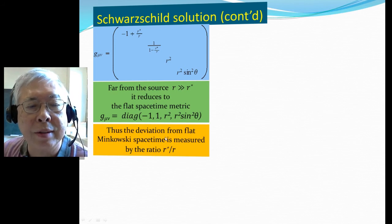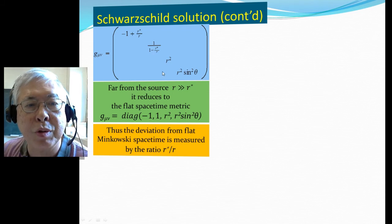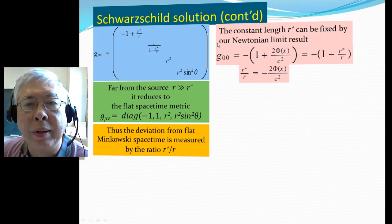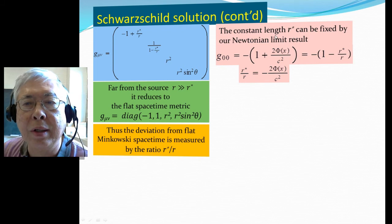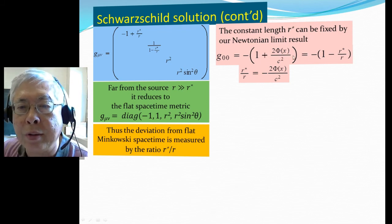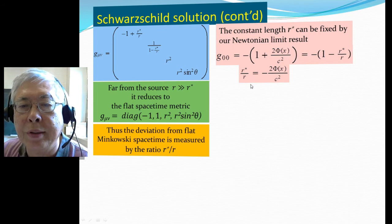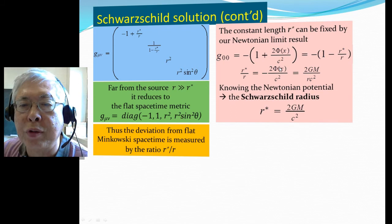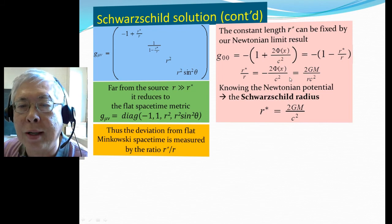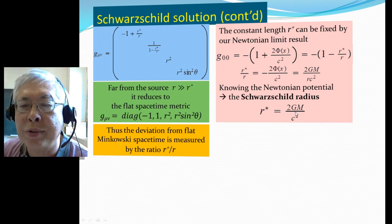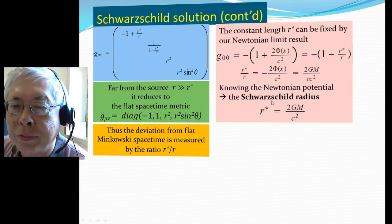Therefore the deviation from flat Minkowski spacetime is measured by this parameter r star over r. We can find the length r star by going to the Newtonian limit. G00 is related to the gravitational potential in this way, and r star is related to gravitational potential. The gravitational potential for a spherical symmetric source is minus GM over r, so r star is 2GM over c squared. This is the so-called famous Schwarzschild radius.